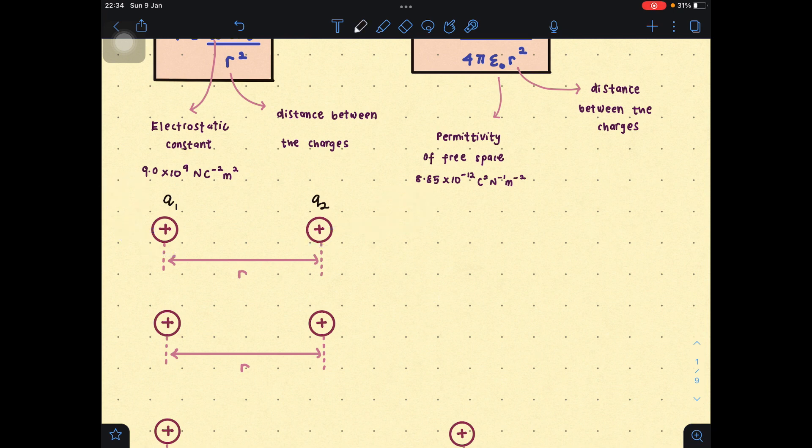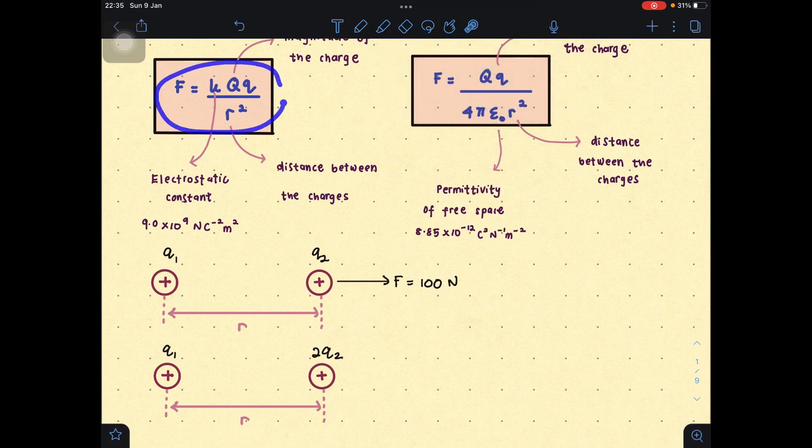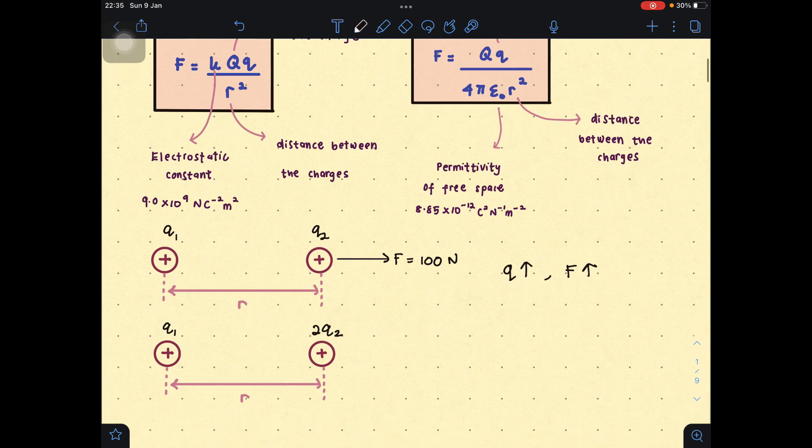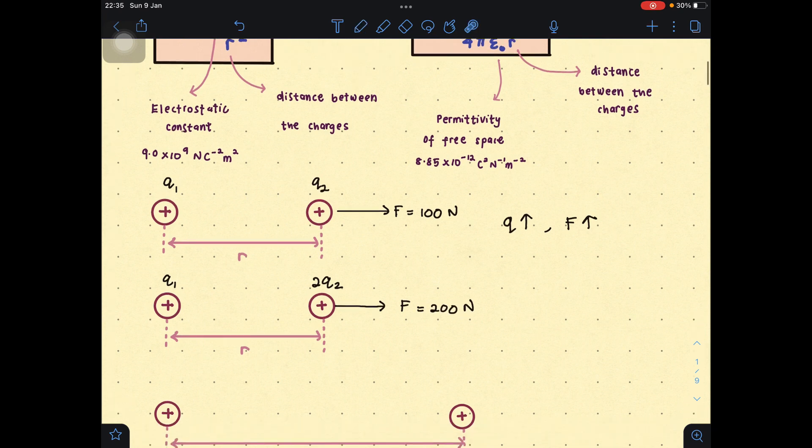Let's say the force acting on this is equal to 100 Newton. And then, we double the charge here. So, contohnya we double the charge here. This one remains the same, Q₁. This one becomes 2Q₂. We double the charge. And the distance between these two charges is still the same. According to Coulomb's law, when the charge increases, the force will increase, because it is directly proportional. So, if we double the charge, force will also double. Meaning that here, the force will be equal to 200 Newton, because it is directly proportional to the charge.